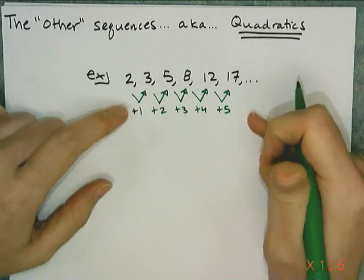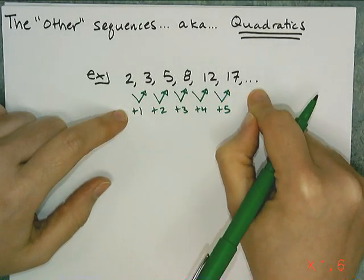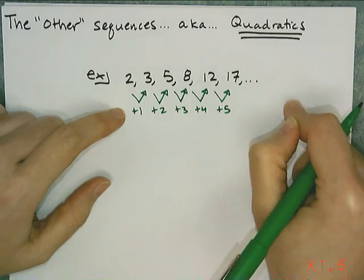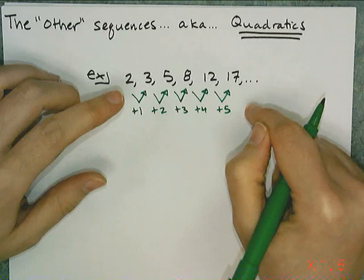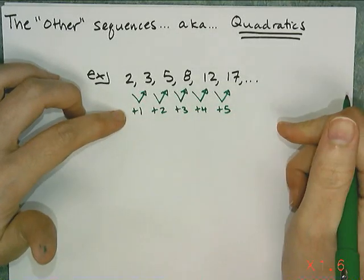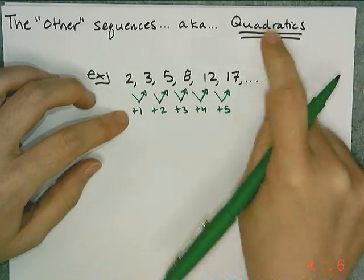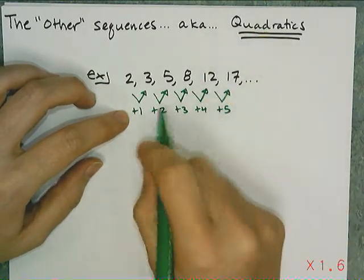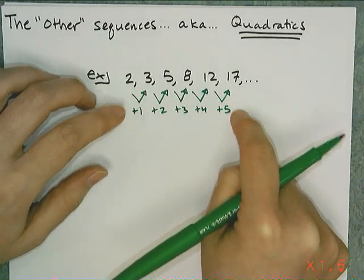So it looks like there is a pattern in what I'm adding each time. So the next term I would add a 6, then I would add a 7, and so on and so forth. Now, this is not arithmetic because I'm not adding the same number each time. Nor is it geometric because I'm not multiplying. This is an example of one of these quadratics. Because if you look at this, there is a pattern in what I'm adding each time.